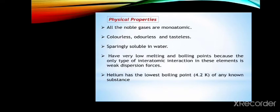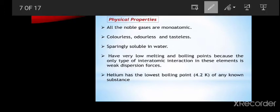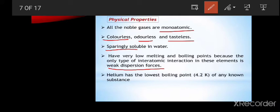Physical properties: all noble gases are monoatomic in nature, and they have no color, no smell, and are tasteless — meaning odorless, tasteless, and colorless. They are sparingly soluble in water. They have very low melting and boiling points due to weak dispersion forces, which are a type of interatomic interaction. Helium has the lowest boiling point of any known substance, at 4.2 Kelvin.